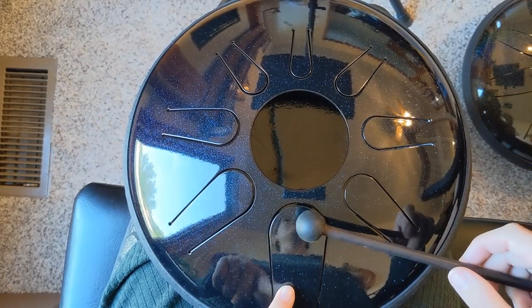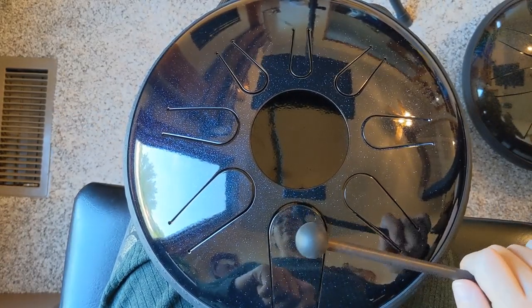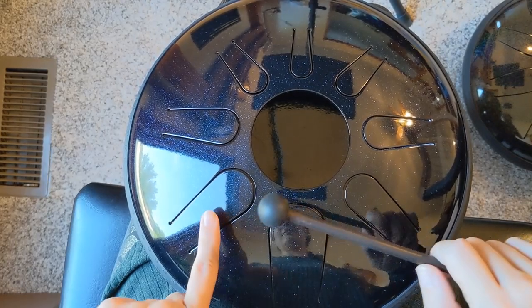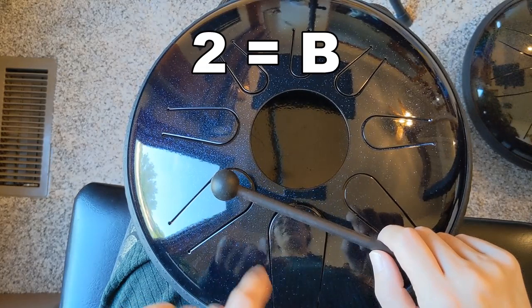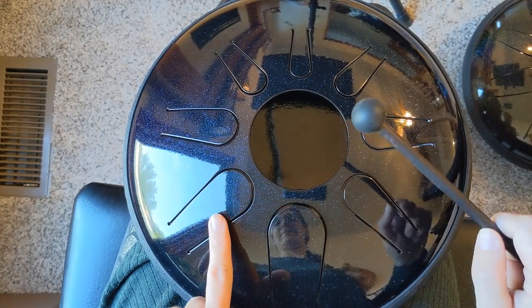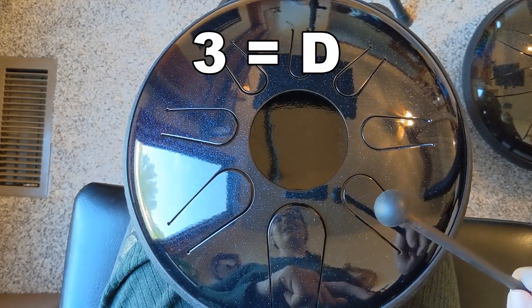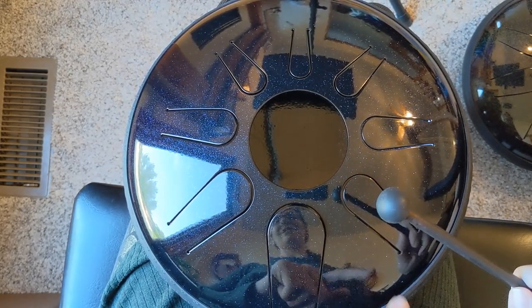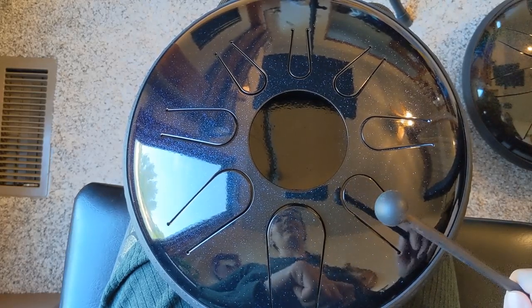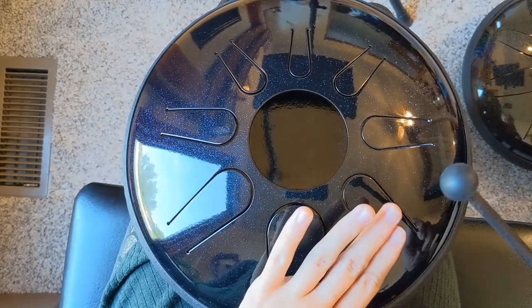So we're going to start on tongue number one with an A flat. And this is our one, our tonic. Tongue number two is going to be a B. Tongue number three is a D. And that is our blue note right there. You can kind of hear how that sounds. Very cool.